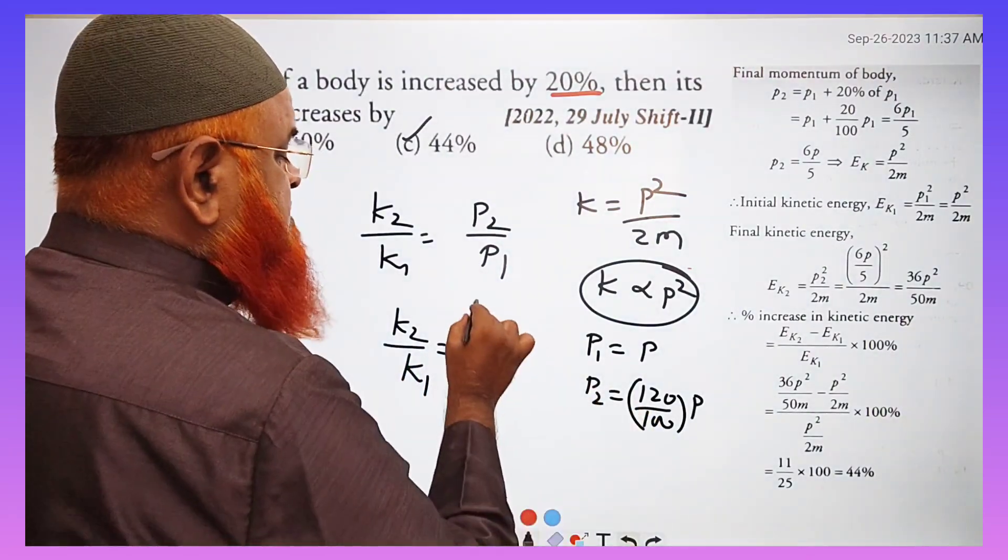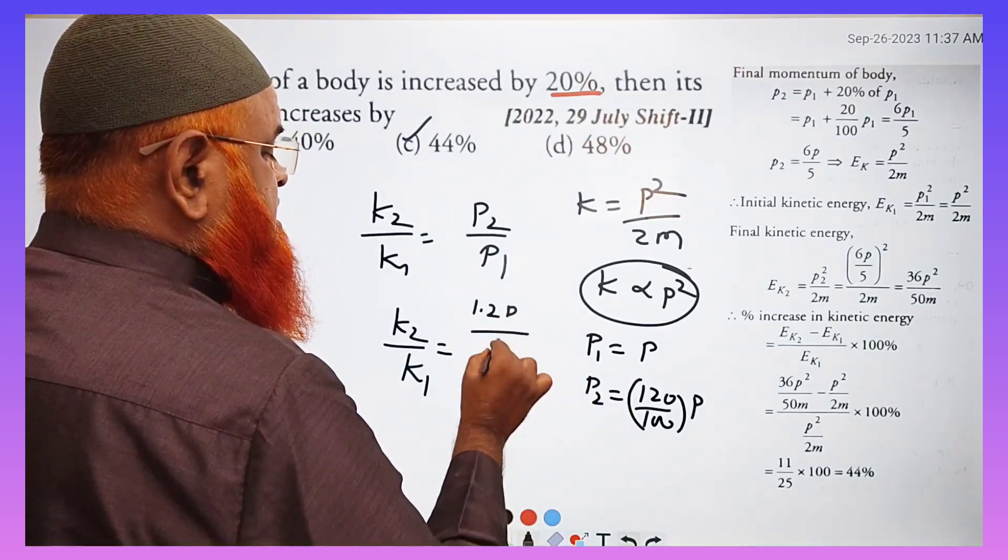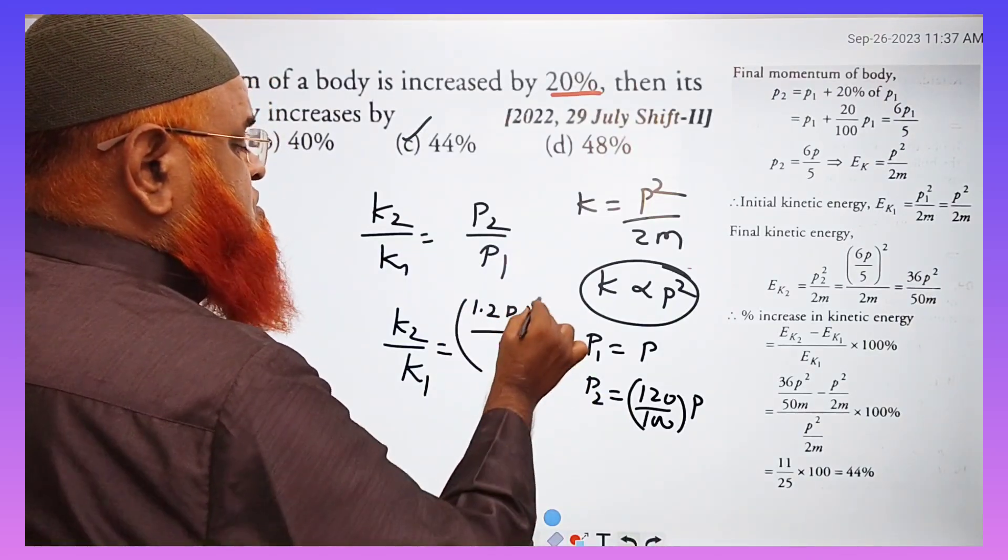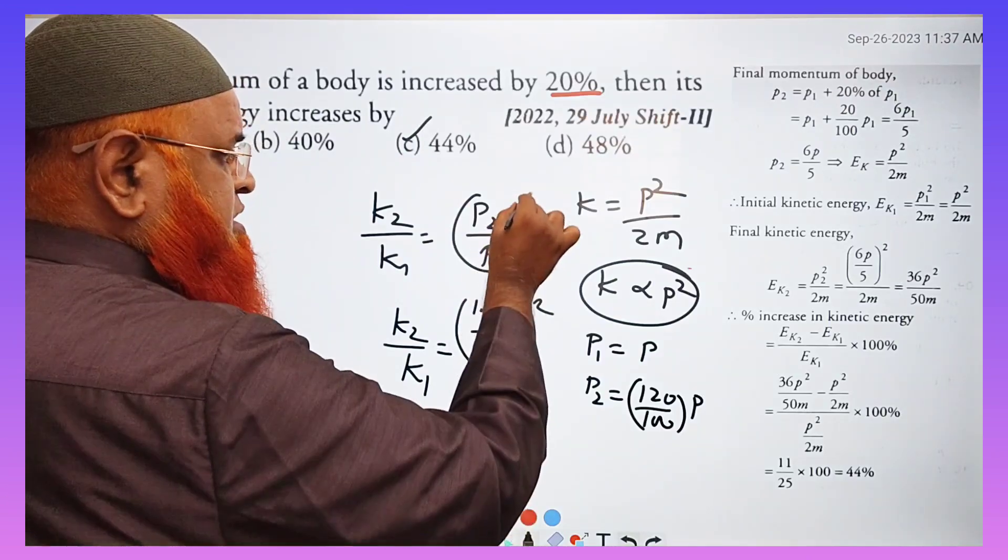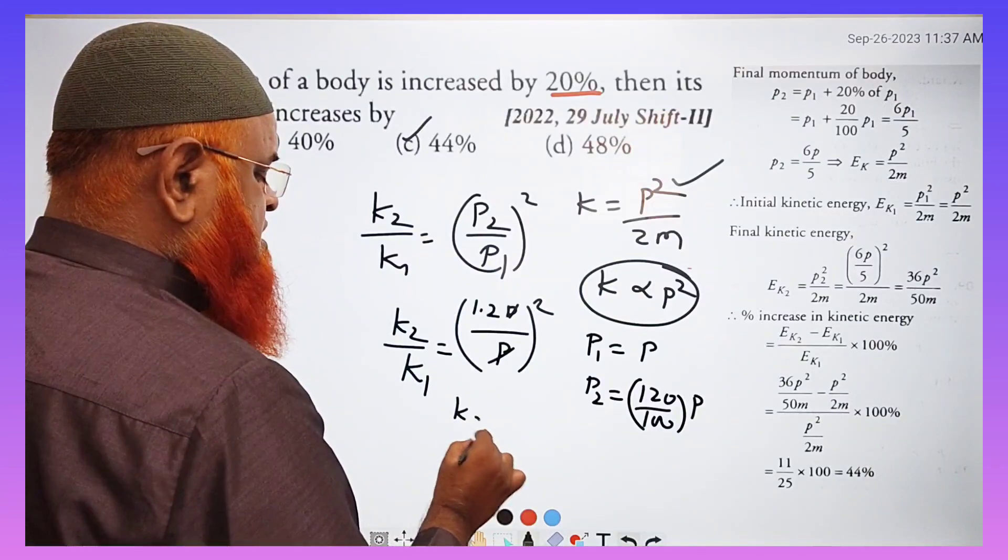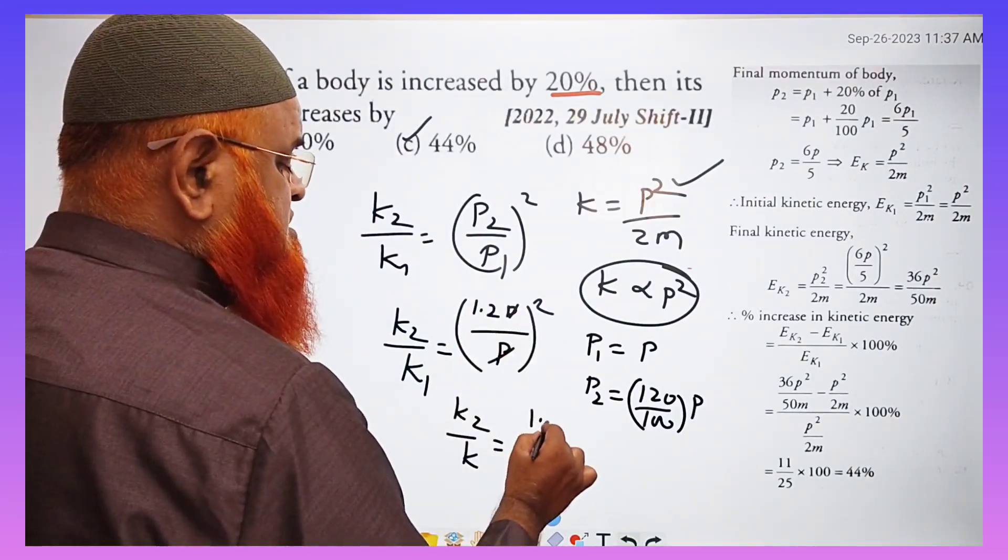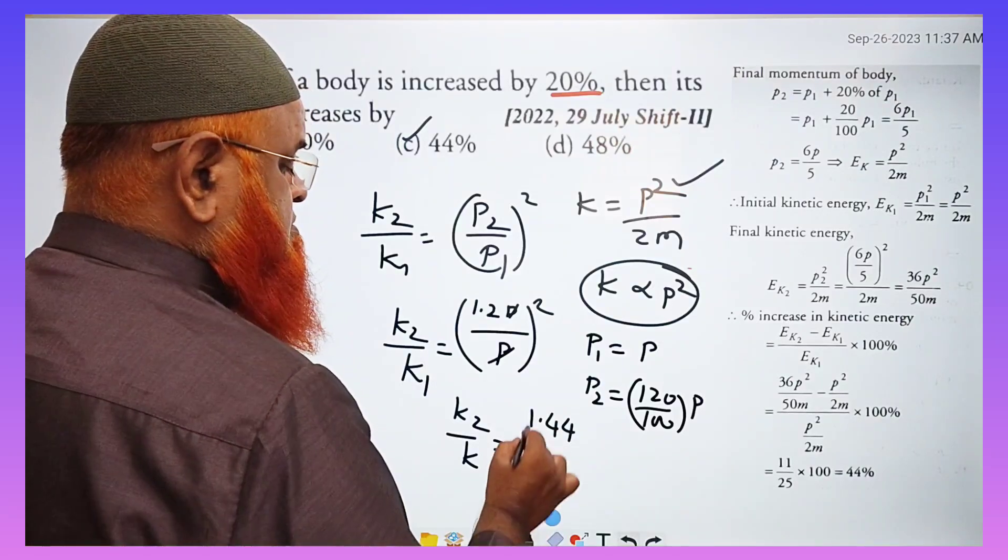P2 is how much? 120 means 1.2 here. P divided by P whole square. Okay, because it is whole square relation. It is given here. So P, P gets cancelled. This is going to become 1. K2 by K1 is equal to 12, 12, 144 means 1.44 you will be getting.